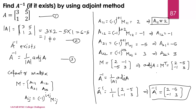For calculating the adjoint matrix of a 2 by 2 matrix, we can remember a shortcut trick: interchange the diagonal elements — instead of 2 write 3, and instead of 3 write 2 — and keep the non-diagonal elements as they are but multiply them by a minus sign. In this way, we can immediately find the adjoint of a 2 by 2 matrix. Thank you for watching the video.